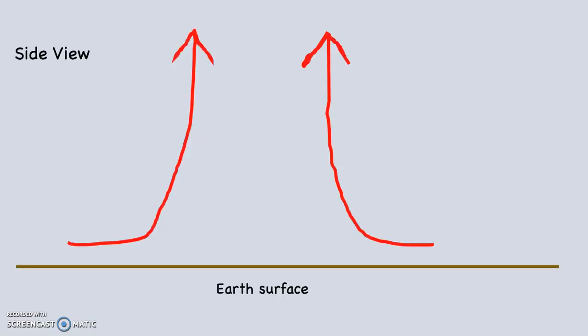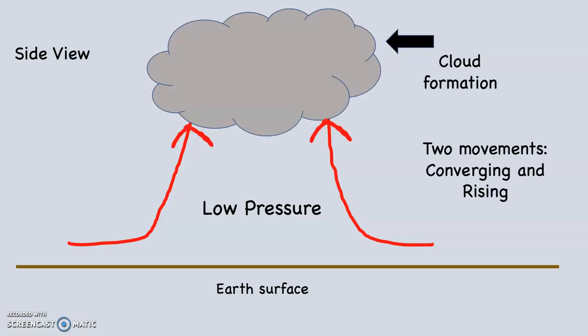I built this diagram as a side view — imagine you're looking across the landscape and can see the movement of the air. The red arrows represent the movement of air in a low pressure system: the air converges and rises. When you have converging, rising air, this is the result of a low pressure system. You can see clouds forming because low pressure, cyclonic systems are associated with clouds.